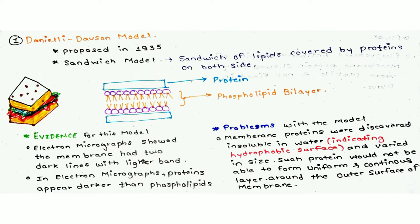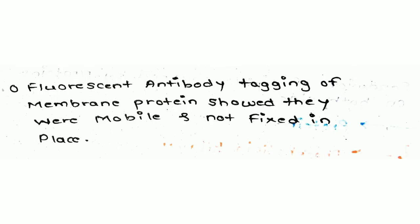Evidence supporting the Danielli-Davson model was based on electron microscope studies showing the membrane had two dark bands with a lighter band in between — in electron micrographs, proteins appear darker than phospholipids. However, this model had drawbacks: proteins come in varieties of shapes, so they could not form a uniform continuous layer. Membrane proteins were later discovered to be hydrophobic substances. Additionally, fluorescent antibody tagging showed membrane proteins were mobile and not fixed in place.